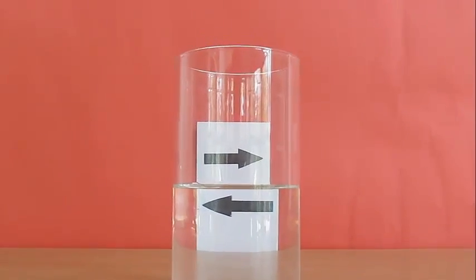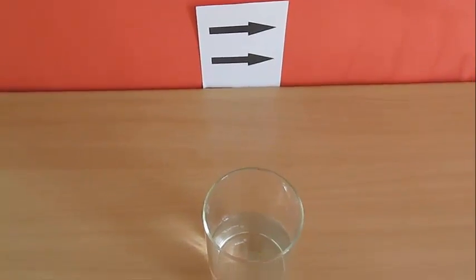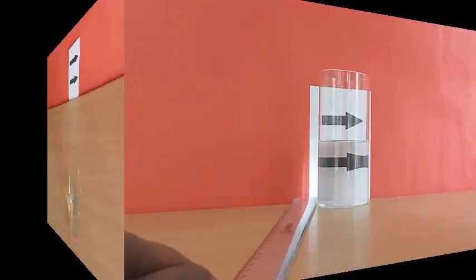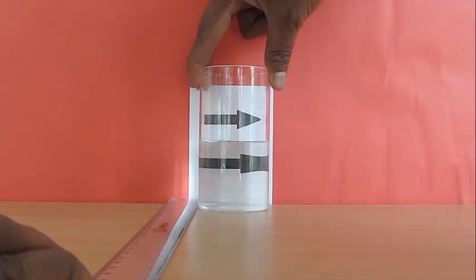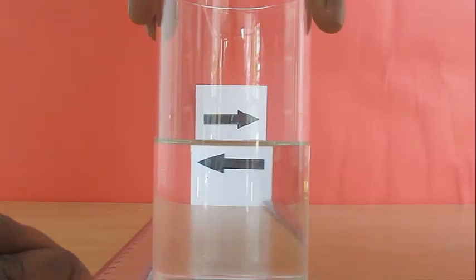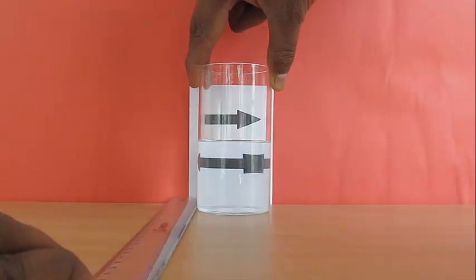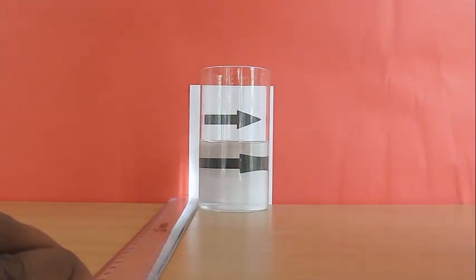And we have not done anything to it. This is the setup from the top. Now notice what happens when we move the glass. When we take it back, you can see the arrows are in opposite direction. But when we try to move the glass close to the arrow, notice it starts pointing in the same direction.